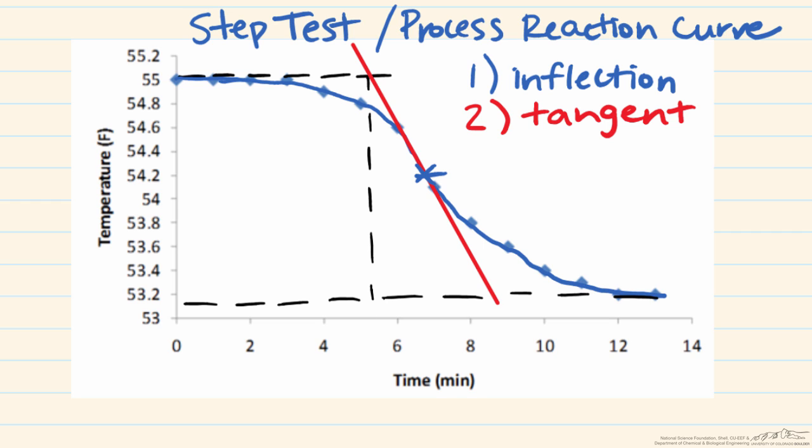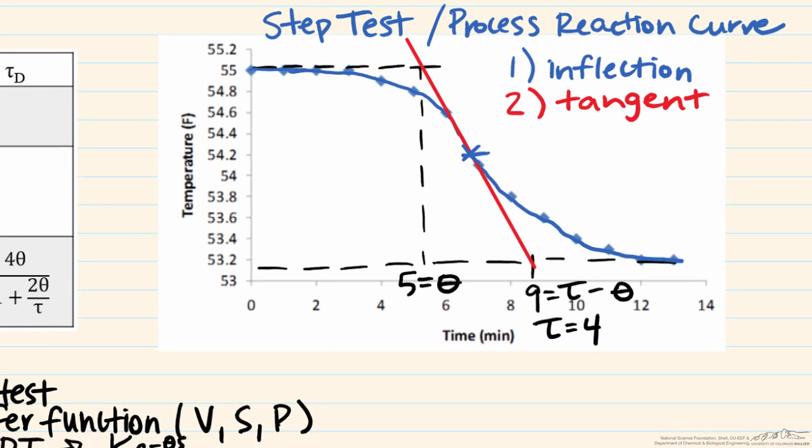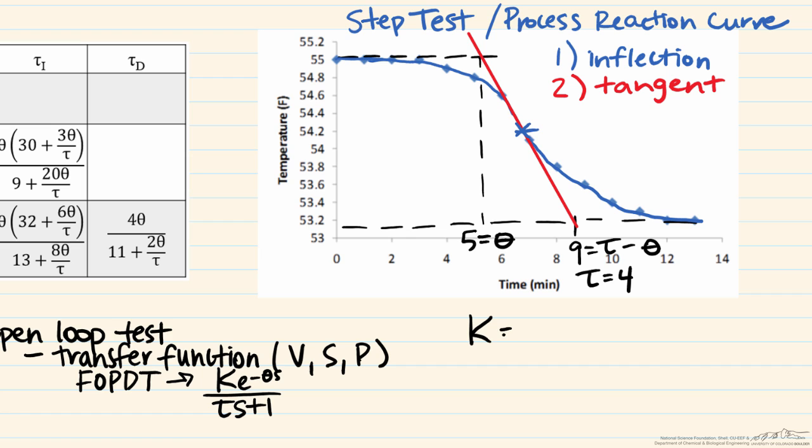So if we look at this, it crosses the initial value at approximately t equals five minutes, so therefore this value represents theta in the transfer function for the FOPDT. And then we look at where it crosses here, we will say that this is nine, and this value represents the magnitude of tau minus theta. So therefore since theta is five, that means that tau is going to be four. So we have theta and we have tau.